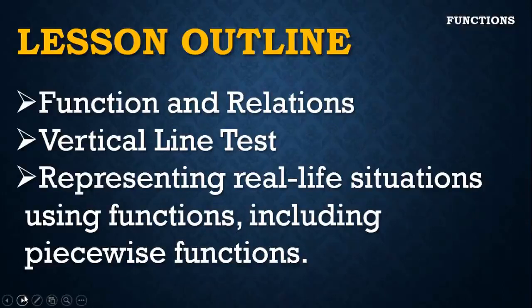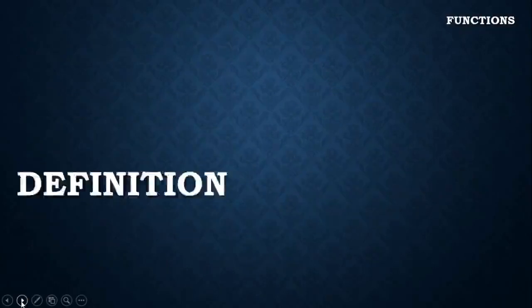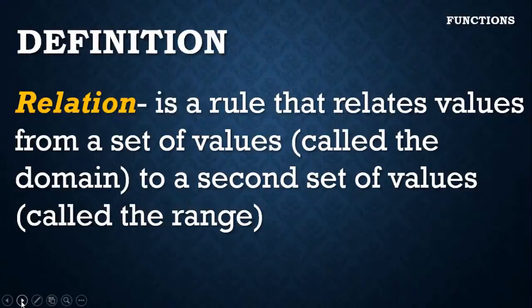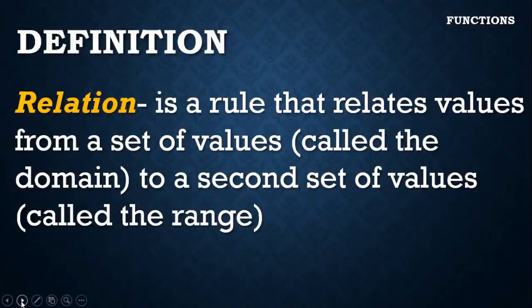Let's start with the first outline. We have the definition of relation. A relation is a rule that relates values from a set of values. This first set of values is called the domain, and the second set of values is called the range. There is a relationship between these two sets of values, and the correspondence between them is called a relation.